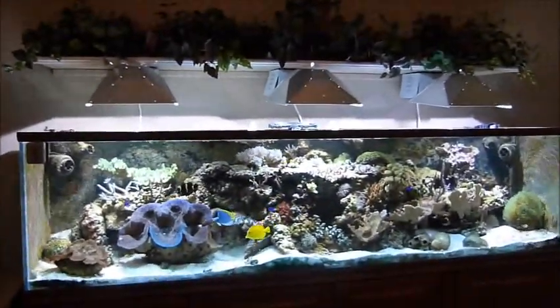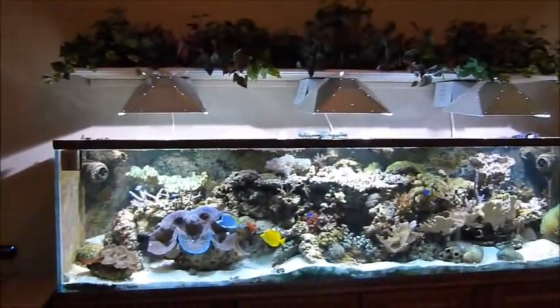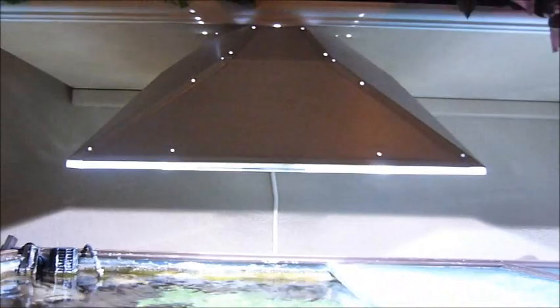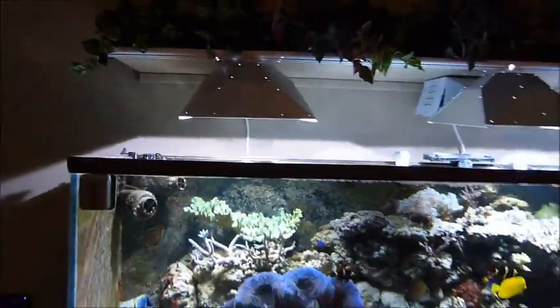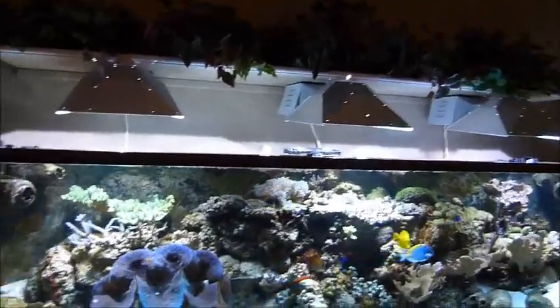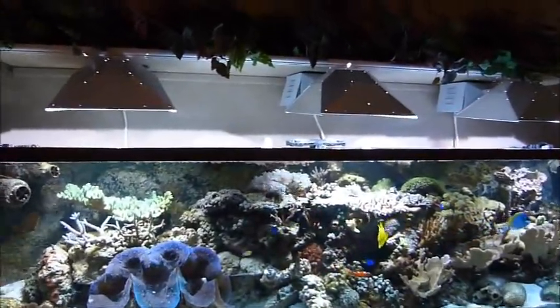Recently Reefbrite came out with their new XHO LED setup, and these are the Luminarch Mini, so they're about 14 and a half inches long. The neat thing about the new Reefbrite XHOs is that they're 15 inches long and they have 12 LEDs in them, which are 3 watt LEDs.